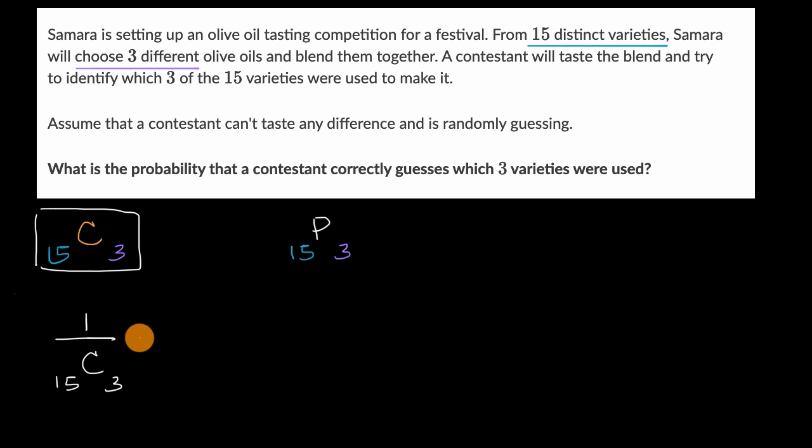And if you wanted to compute this, this would be equal to one over, now how many ways can you pick three things from 15? And of course there is a formula here, but I always like to reason through it. Well, you could say, all right, if there's three slots, there's 15 different varieties that could have gone into that first slot.